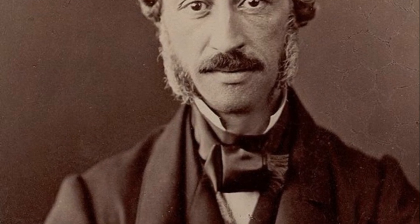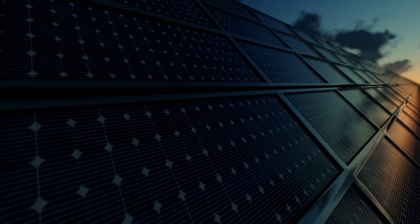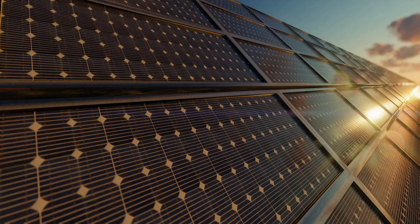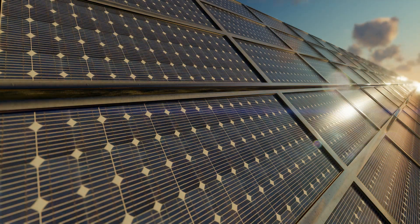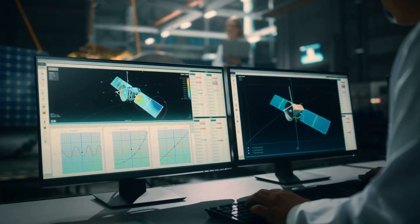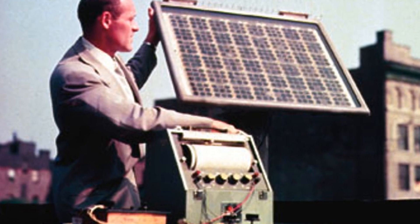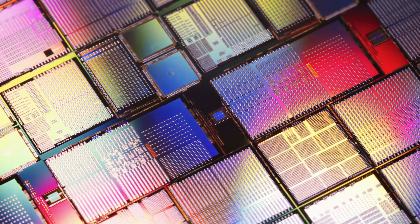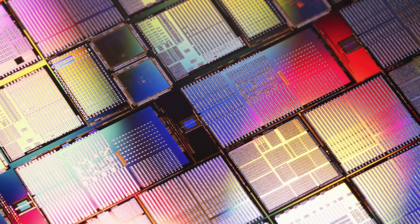It all started in 1839 when French physicist Edmond Becquerel discovered the photovoltaic effect, which is the ability of certain materials to generate electric current when exposed to light. Fast forward to 1954, Bell Laboratories developed the first practical silicon solar cell, marking the beginning of the solar revolution.